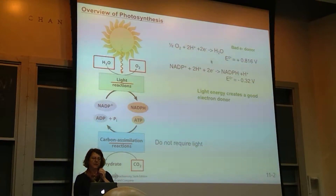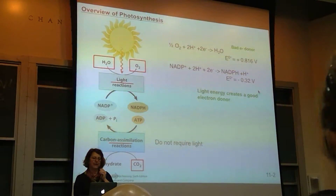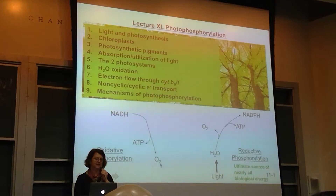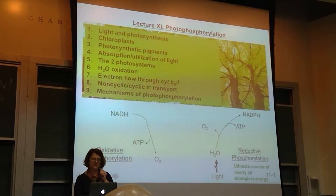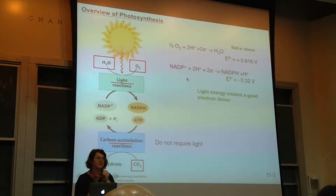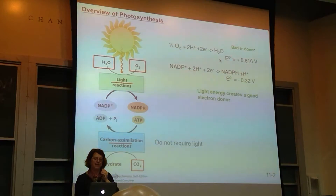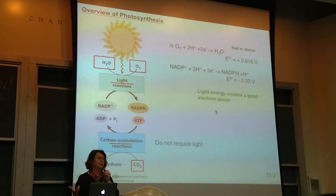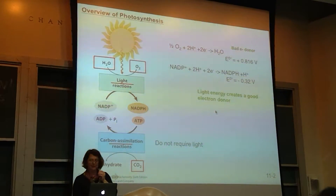If we look at the electron potential — when we're doing oxidative phosphorylation and comparing NADH versus water as donors — you can see that NAD+ for oxidative phosphorylation would be a good donor, but water would be a really bad donor. So light is actually required to create a good electron donor. This is a quite unusual process, and we're going to be going through that today.